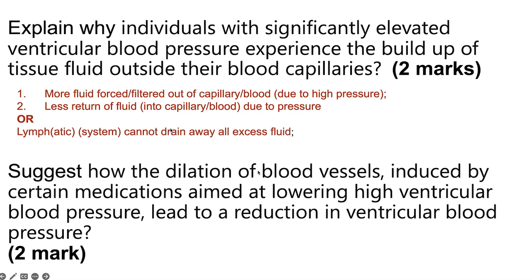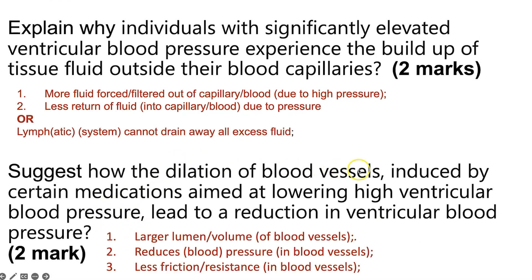Next question: suggest how dilation of blood vessels induced by certain medications aimed at lowering high ventricular blood pressure could lead to a reduction in ventricular blood pressure. If you have a dilated blood vessel, there is a larger lumen — a bigger space for blood to flow through — which reduces pressure. Additionally, with a larger lumen, less blood is touching the walls of the blood vessel, reducing friction, which also lowers blood pressure.